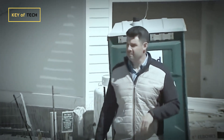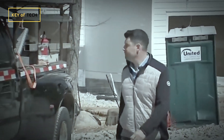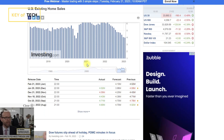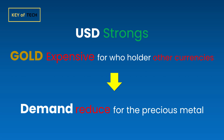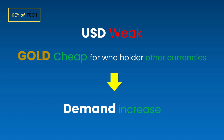Now let's talk about the USD. The strength of the USD can have a significant impact on the price of gold. When the USD is strong, gold becomes more expensive for buyers who hold other currencies, which can reduce demand for the precious metal. Conversely, when the USD is weak, gold becomes cheaper for foreign buyers, which can increase demand and drive up the price.